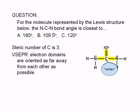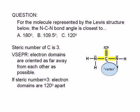Valence-shell electron pair repulsion theory, VSEPR, says that regions of high electron density are oriented as far away from each other as possible. If there are three regions of high electron density around an atom, then these regions would be furthest from each other by being oriented 120 degrees apart.